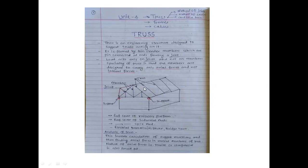This skeleton will be placed over here, here, and here. Then roofing material will be placed on it. Where can we find this kind of structure? Roof cover of railway station, railway platform, roof cover of industrial sheds, roof cover of cycle sheds. Even electrical transmission towers and bridges of truss are also examples of trusses.